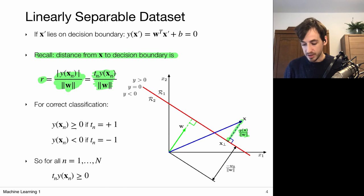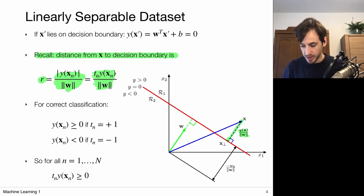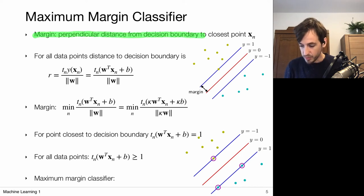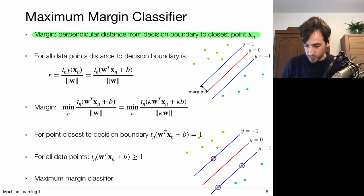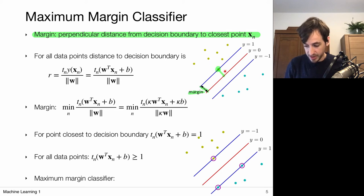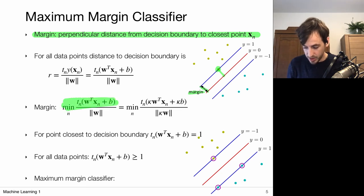We define the margin as the perpendicular distance from the decision boundary to the closest point x_n. For each data point, the distance to the decision boundary is given by the formula, and we select the point which minimizes this distance. So the margin is defined by the index n that minimizes t_n · y(x_n) / ||w||, and we want to maximize this with respect to model parameters w and b.